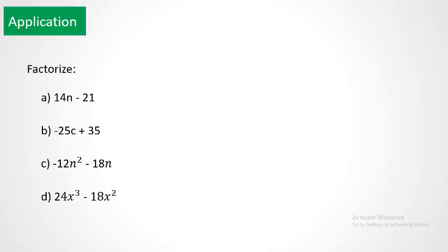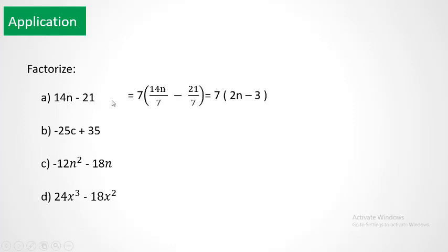Application. First, find the prime factorization of the coefficients and determine the GCD. The GCD between 14 and 21 is 7. There is no common variable, so the common factor is 7. Divide each term by 7: 14 divided by 7 is 2, and 21 divided by 7 is 3.